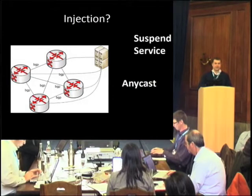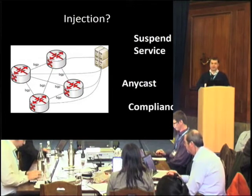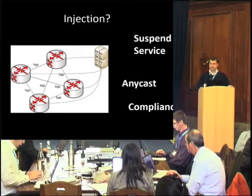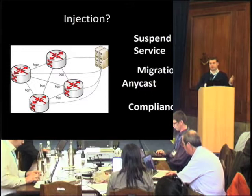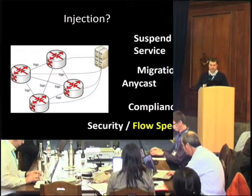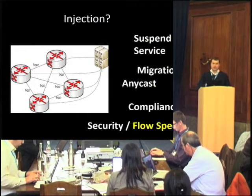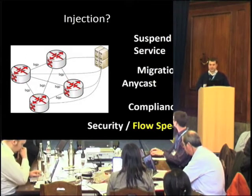You can suspend people's services by not letting their prefixes go to their kit anymore. You might have a compliance reason — you might have to proxy certain traffic, and you can cause the traffic to flow through the proxy using BGP route injection. You might want to use it for a service migration as well, so if you're moving between sites, it's a flexible way to alter next hops and fiddle with your network. Additionally, there are security and FlowSpec reasons why you might want to do this, which we'll talk about in great detail shortly.